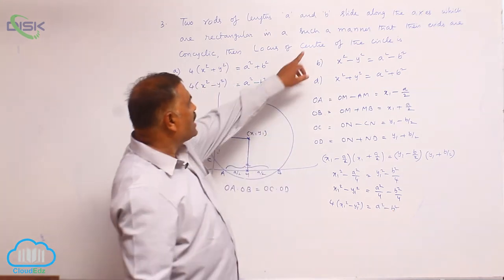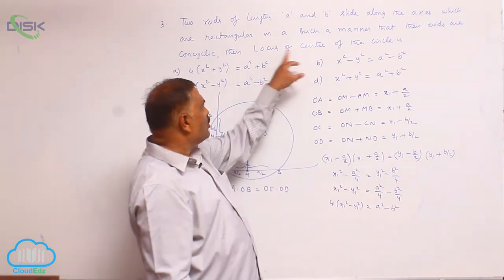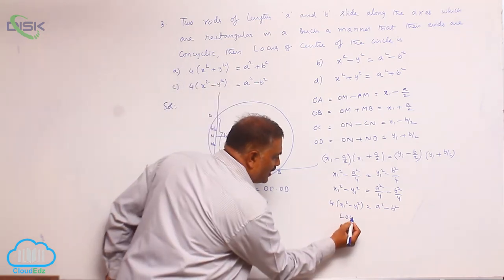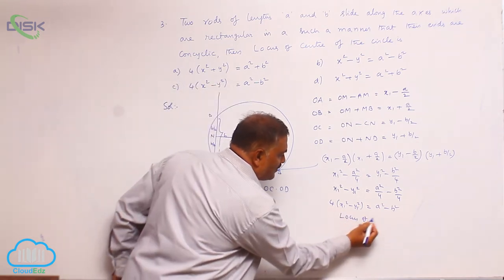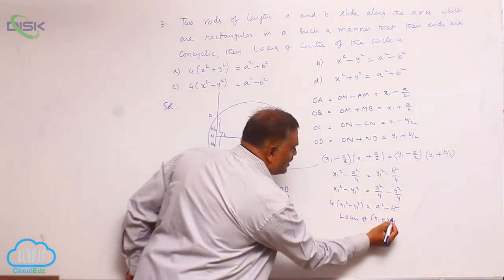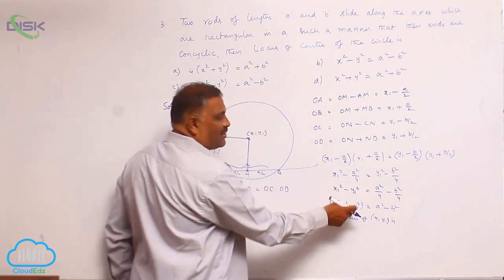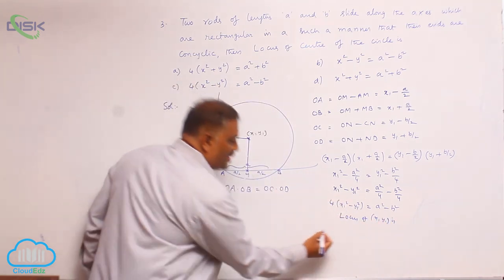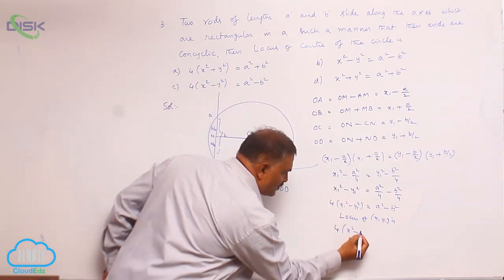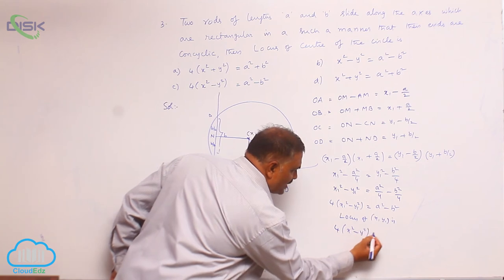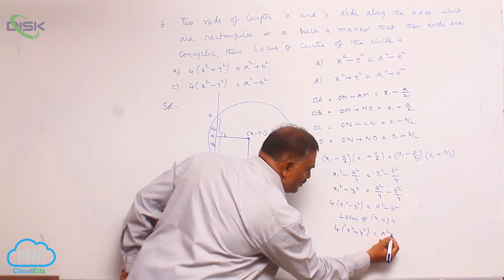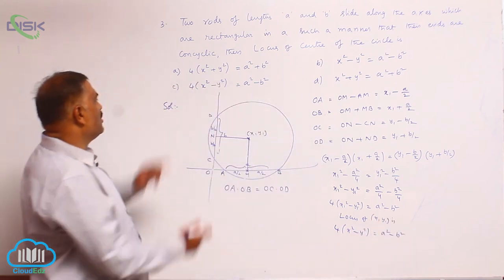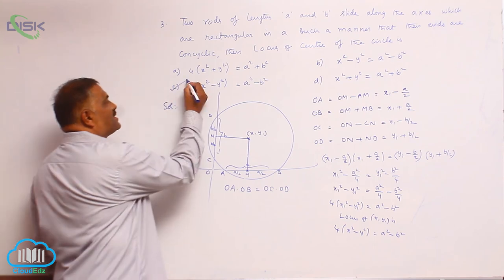Since you are asked to find out the locus, the locus of x1, y1 means replace x1, y1 by general coordinates: 4 into x square minus y square equal to a square minus b square. So, option C is correct.